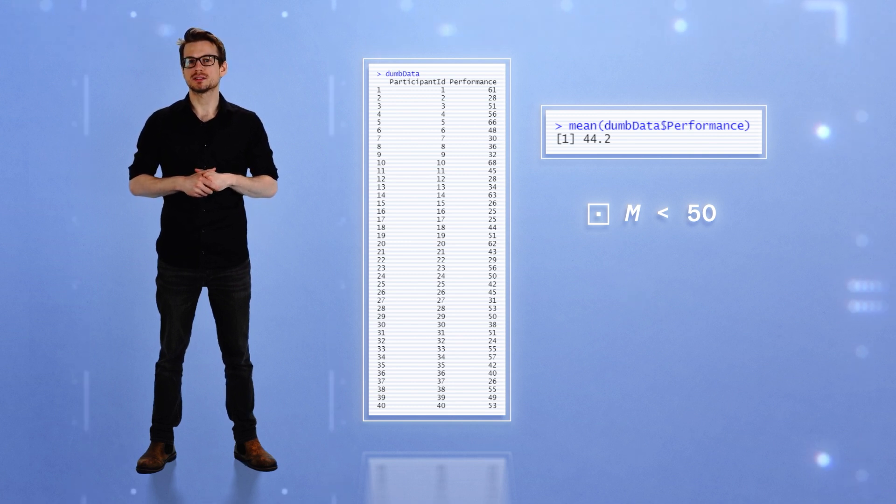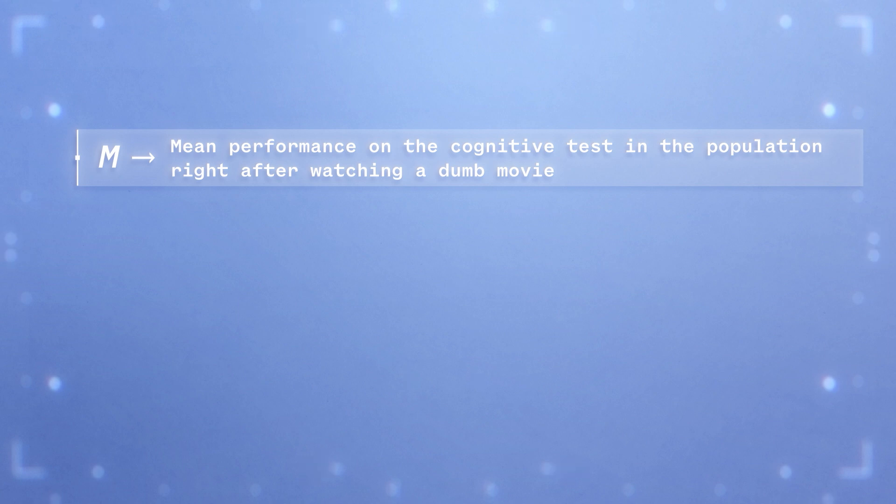You run a hypothesis test on the corresponding parameter m. m is the parameter value that describes the mean performance on the cognitive test in the population of people right after watching a dumb movie. The test contrasts two hypotheses as follows: H0 states that m equals 50, H1 states that m is different from 50.